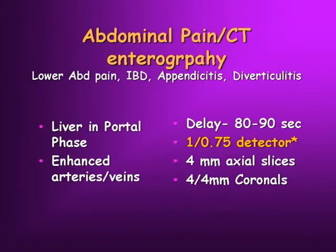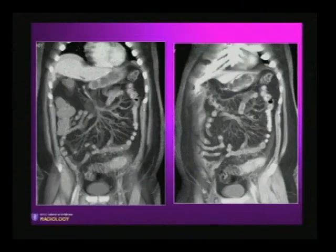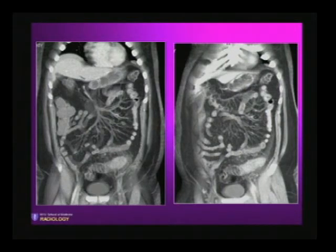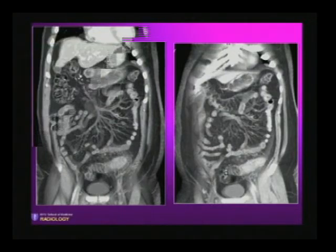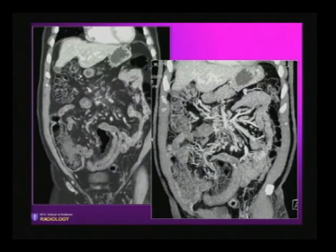For abdominal pain or CT enterography — lower abdominal pain, appendicitis, diverticulitis, inflammatory bowel disease — we still want the liver in the portal phase with vessels enhanced, so we scan at 80 to 90 seconds. We have our thin sections going to the workstation, 4-millimeter axials, and we also knock off a set of 4x4 coronals, which has some billing implications. Here's a patient with diverticulitis shown elegantly — you can see the reflections of the sigmoid colon, the relation to the abdominal wall, separation of the small bowel.